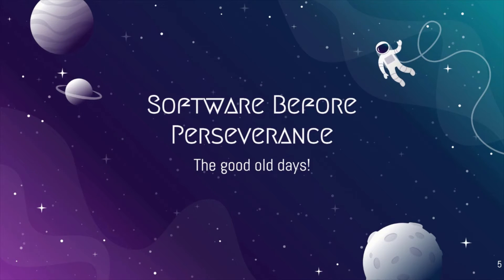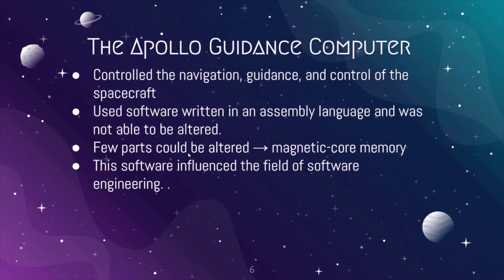Software was used widely in space before the rover was created. One major example would be the Apollo Guidance Computer, a digital computer used in the Apollo program. The computer controlled the navigation, guidance, and control of other aspects of the spacecraft. The guidance computer used software written in assembly language and was mostly unalterable, though parts of the software could be overwritten by astronauts. The development of this software contributed greatly to the field of software engineering.